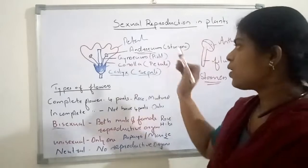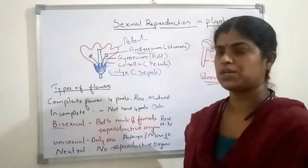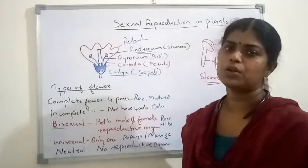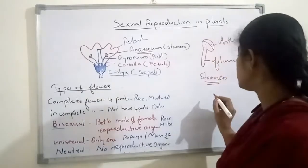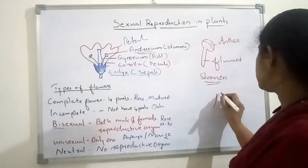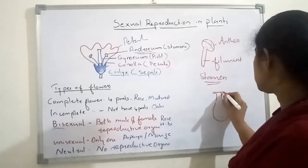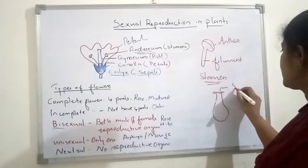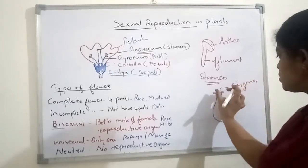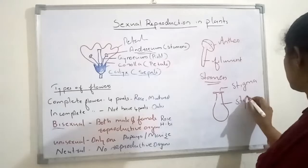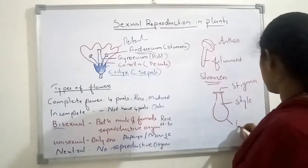Next to the androecium, the innermost whorl of the flower is known as the gynoecium. Gynoecium is the female part of the flower, and gynoecium is made with pistils. A pistil has three major parts. The distal portion of the pistil is known as the stigma. The tube-like portion is known as the style.